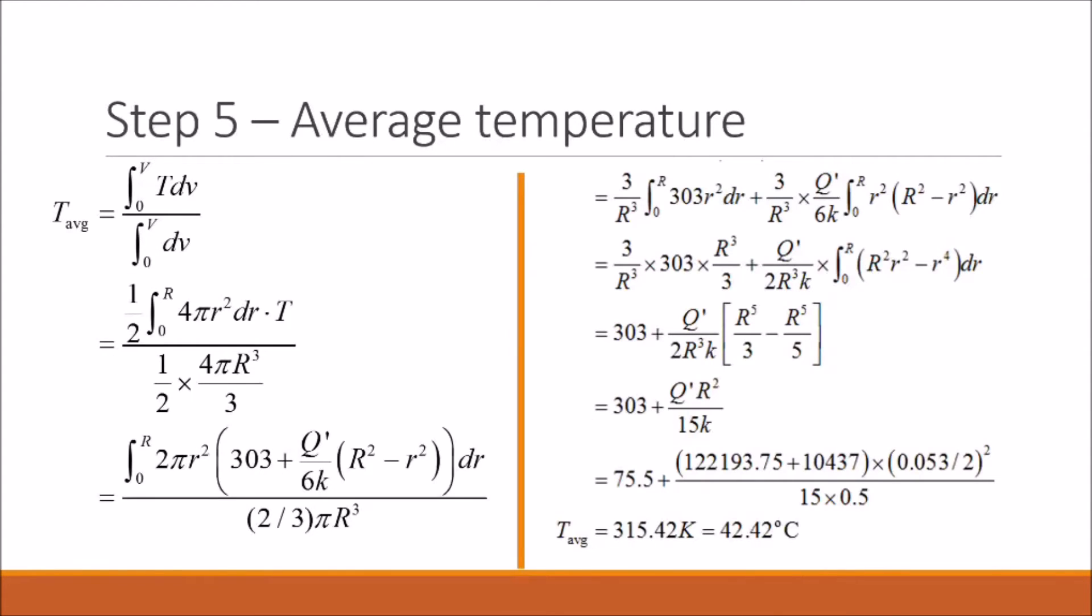To find our average temperature, we begin with our volume average equation. And we're given the hint that our dV is really just equal to 2πr² dr. So we can plug this in and solve for our average temperature, which ends up being 42.42 degrees Celsius.